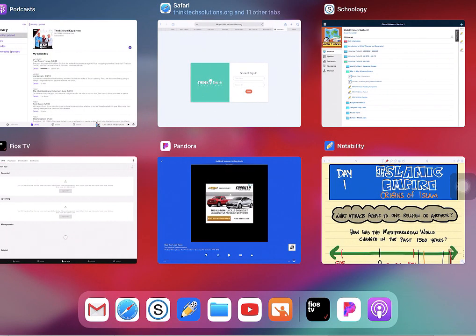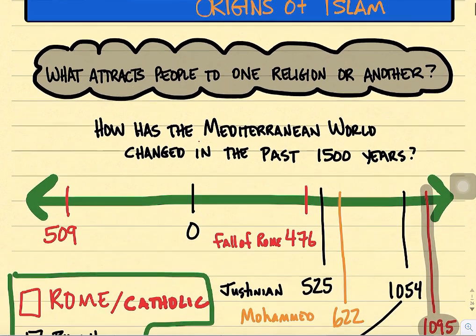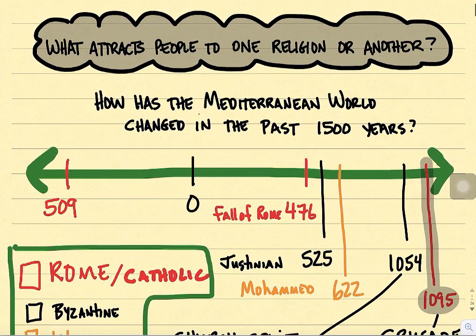We're going to be looking at the Islamic Empire. This picks up around the 600s through about the 1500s. One of the big questions is how people converted to Islam — how it got started, when it got started, and by whom. The big question in the bubble is: what attracts people to one religion or another? We'll see many people convert to Islam, call themselves Muslims, and speak Arabic.